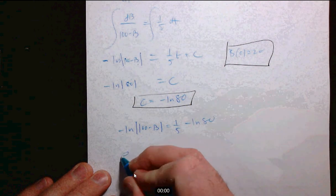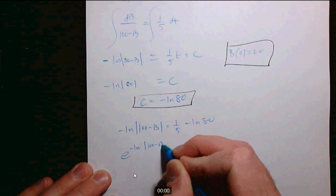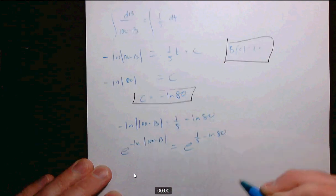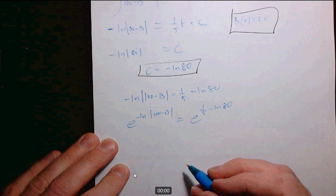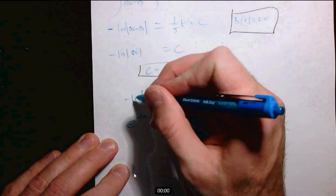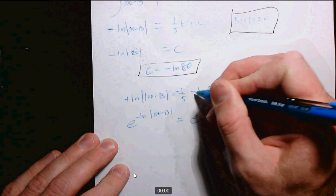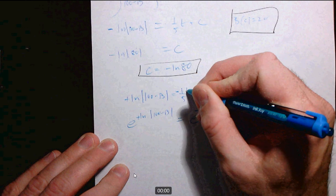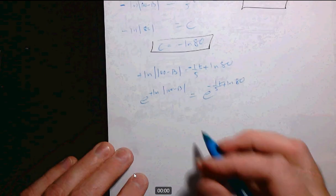Now you exponentiate and you have to be careful here. One other thing you want to do. So this actually probably would have been easier to move the minus sign over here, right? Oh, and there's a T. There it is. And so now, this is 100 minus B.